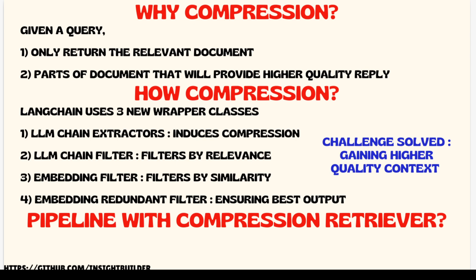The turbocharger that we are talking about is going to sit in between the question and sending it to the large language model. In between, there are the relevant documents that are getting collected — that part is where the compression algorithm comes into picture. There are a couple of ways to do the compression. One is direct compression where the data collected from the document is compressed using algorithms and then sent to the large language models. You can have filters by relevance and filters by similarity. And finally, you have another way of embedding the entire documents in such a way that it will give an efficient reply.